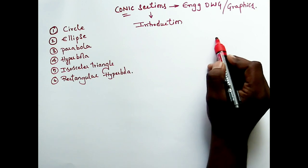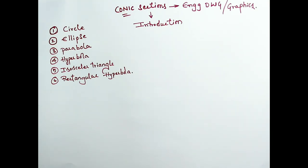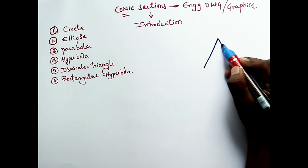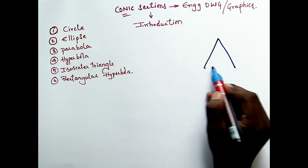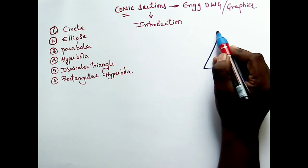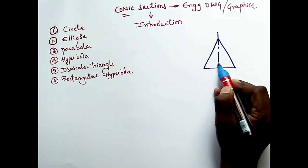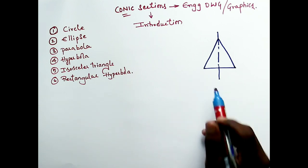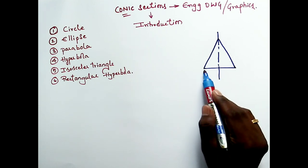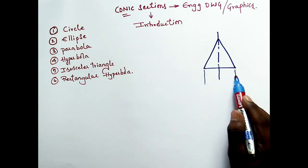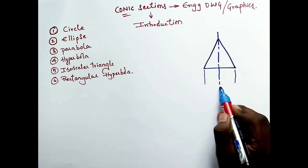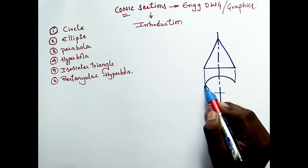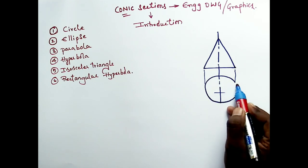When I view from the front, I could see a triangle shape followed by an axis line. When I view from the top, I could see a circle. Let us draw using a projector line. If you understand this concept properly, the rest becomes very easy to draw. Let us draw the top view also for your understanding.